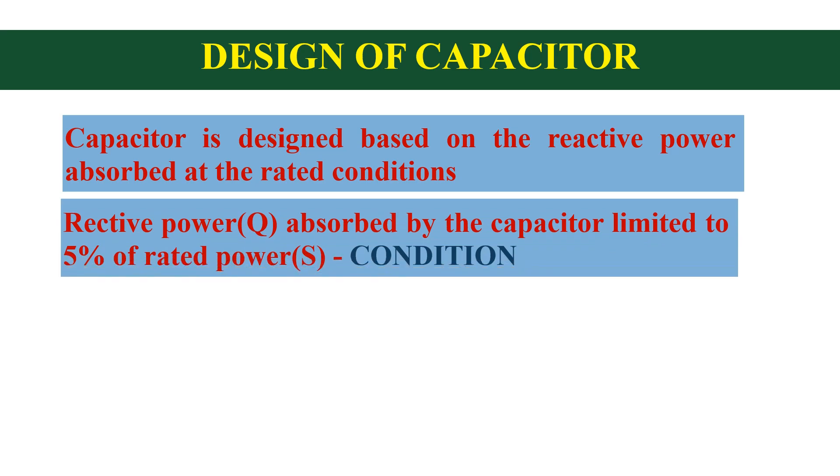We know that reactive power can be written as Q is equal to V square divided by 1 by 2 pi fc. Now apply the 5 percentage condition, then V square divided by 1 by 2 pi fc is equal to 5 percentage of rated power.